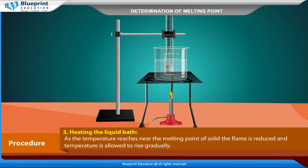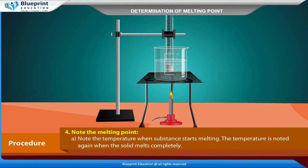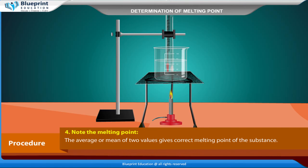As the temperature reaches near the melting point of the solid, the flame is reduced and the temperature is allowed to rise gradually. Note the temperature when the substance starts melting, and note it again when the solid melts completely. The average of the two values gives the correct melting point of the substance.